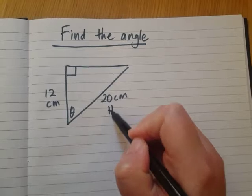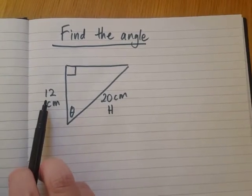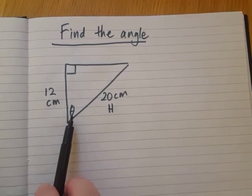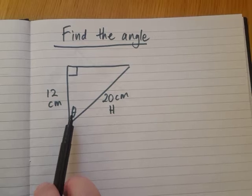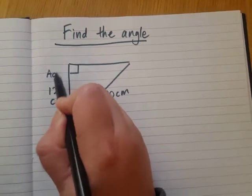Let's call it H for hypotenuse. Next, let's label this side here. We know it's 12 and I can see it's next to this angle we want to find. It's next to it. It is adjacent. So let's write down adjacent.